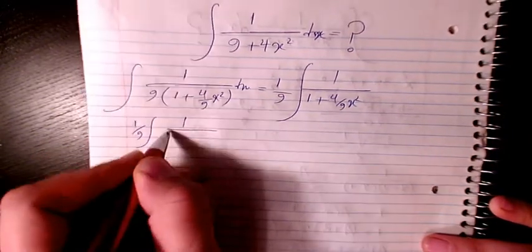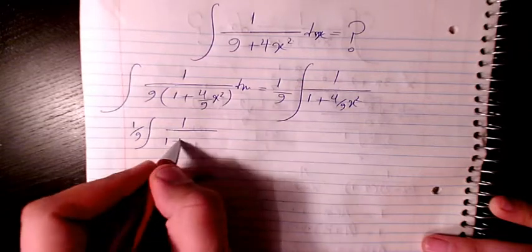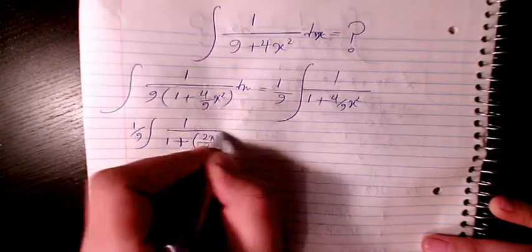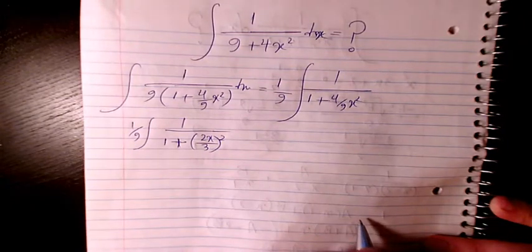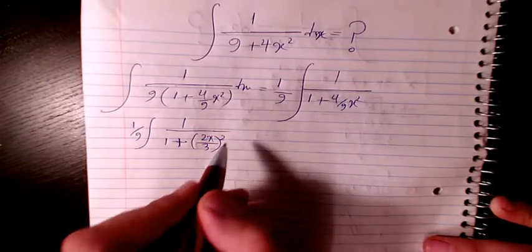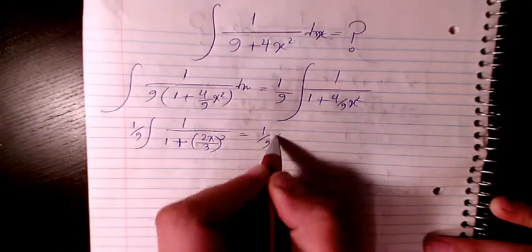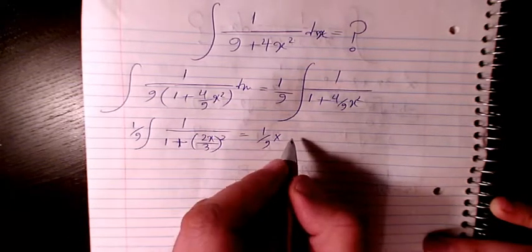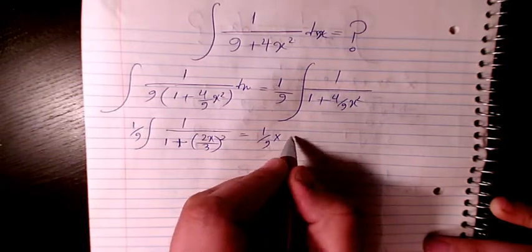And after that, what I can do is multiply and divide this function by 2 over 3. So if I divide it by 2 over 3, it will be 3 over 2.